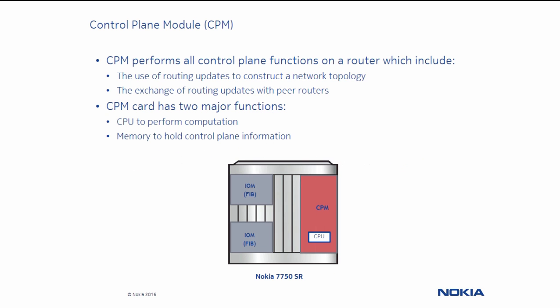Let's talk about the control plane module, or CPM. It is considered the brains of the Nokia 7750 service router and is used to exchange routes to construct a network topology, which is referred to as the Forwarding Information Base, or FIB. The CPM downloads the FIB to each input-output module, which is then used to perform data forwarding.